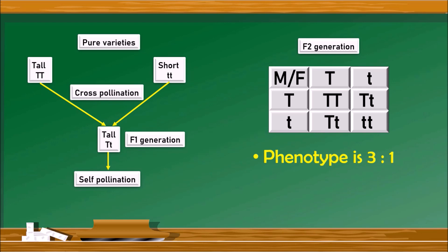When it comes to the genotypic ratio, the pure varieties capital T capital T and small t small t are each in the ratio of one, while capital T small t plants are in the ratio of two. Hence the genotypic ratio is 1:2:1. This is how we write the monohybridization cross between pure varieties of tall and short plants.